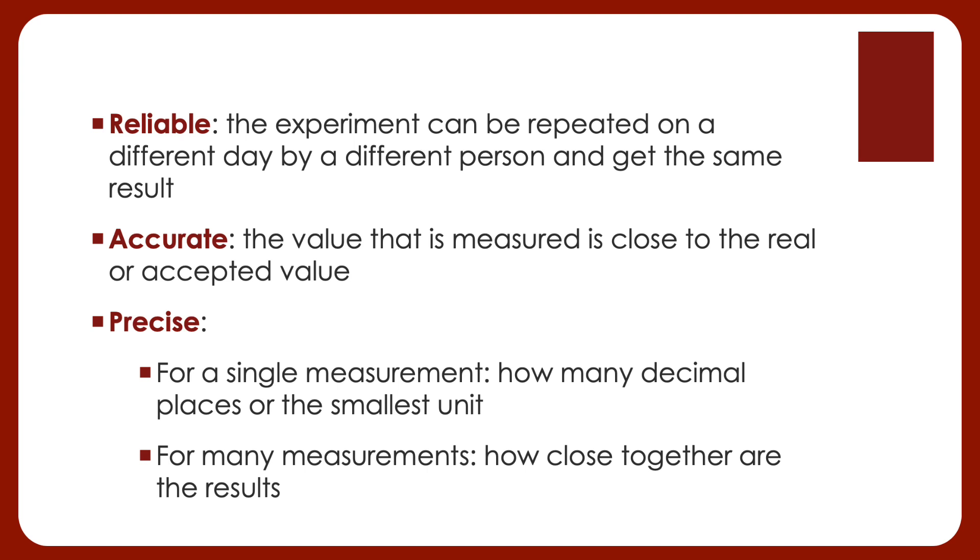Now precise can have two different meanings. For a single measurement we're talking about how many decimal places you have. In other words how many small little lines are on your ruler? Is it every centimeter or every millimeter? Every millimeter will be more precise. For a collection of measurements we want to know how close the results are together and I've got an example to help us.